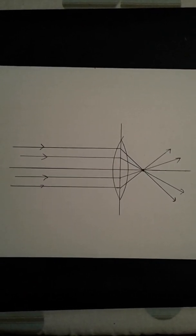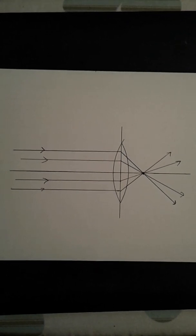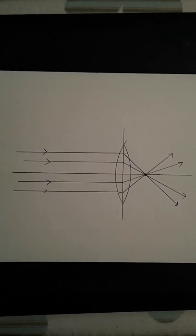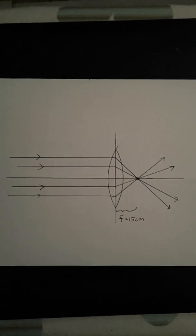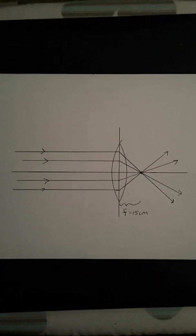So all the light rays are coming in parallel to the principal axis because the bulb was so far away. We measured the focal length to be 15 centimeters. That distance is measured from the center of the lens.